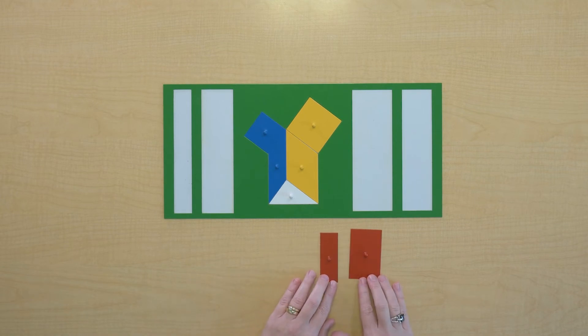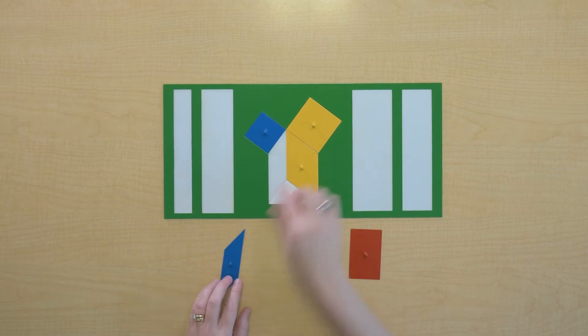So we could say that these two parallelograms added together equal this red square.